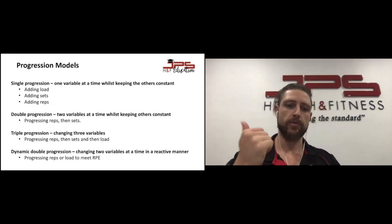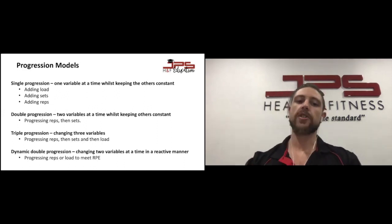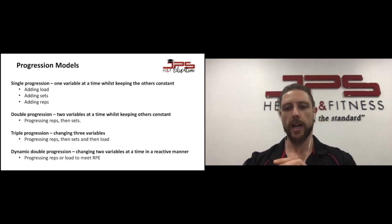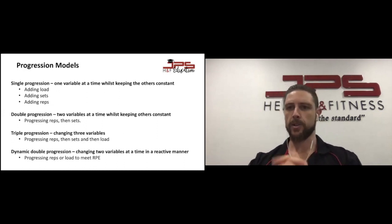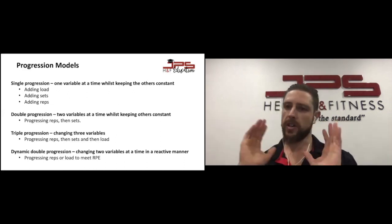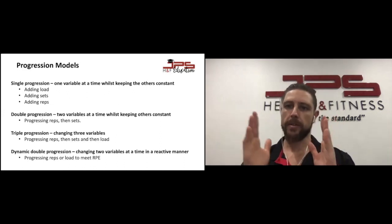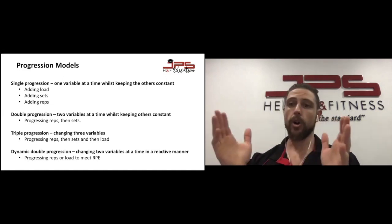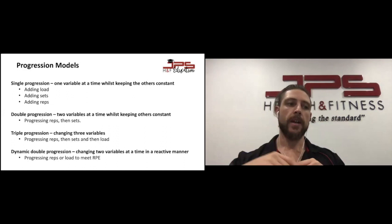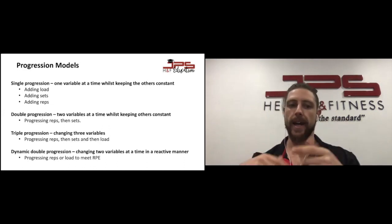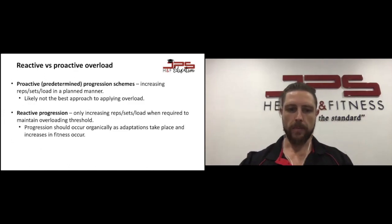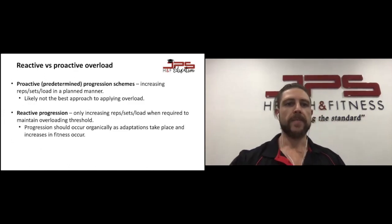Triple progression is where we change three variables — progressing reps, then sets, then load. Dynamic double progression, which is my favorite, is where we change two variables at a time in a reactive manner. We have a rep range with a target RPE, and you can hit any rep number within that range at any load provided you meet the RPE. Over time, progress comes organically — you'll see more reps or more weight, and it unfolds as it should.